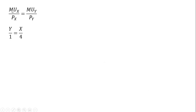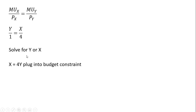So the marginal utility of good x is y, divided by the price of good x, which is 1. The marginal utility of good y equals x, divided by the price of good y. We want to solve for x or y, whichever simplifies easiest. In this case, solving for x and multiplying everything through by 4, we get x equals 4y.